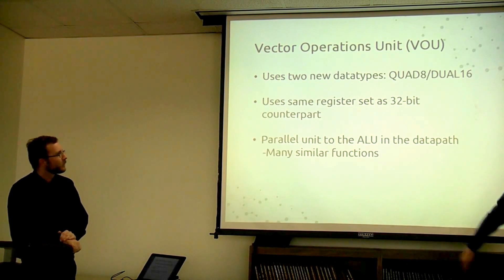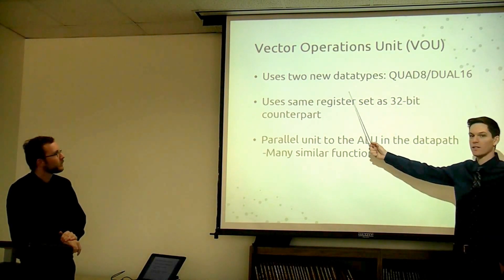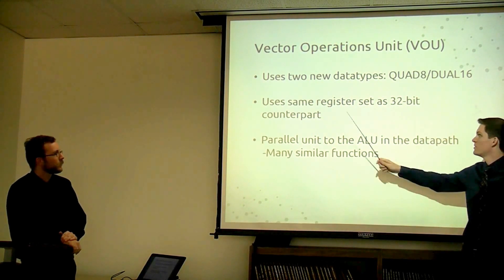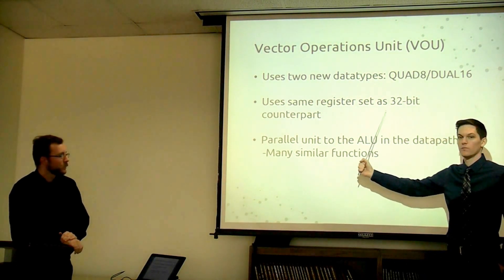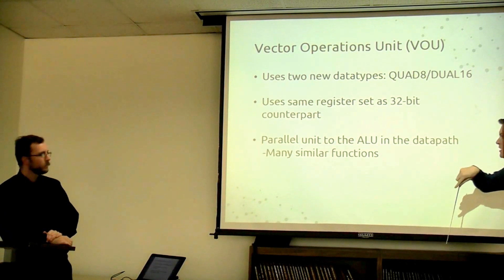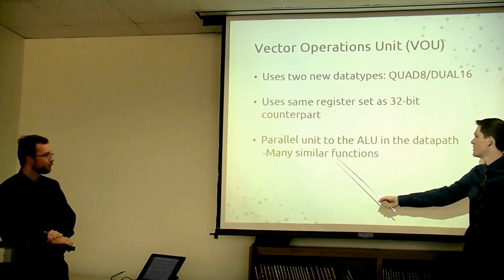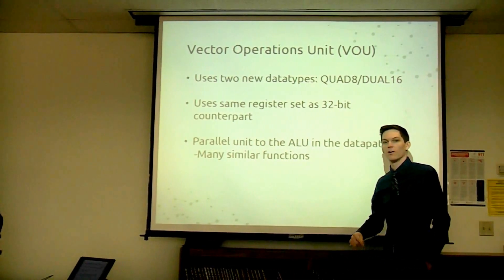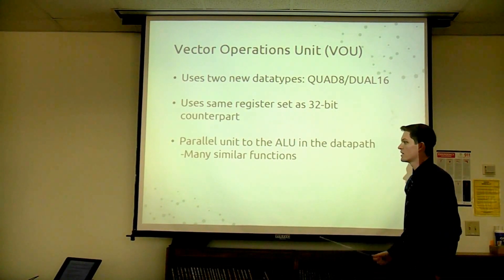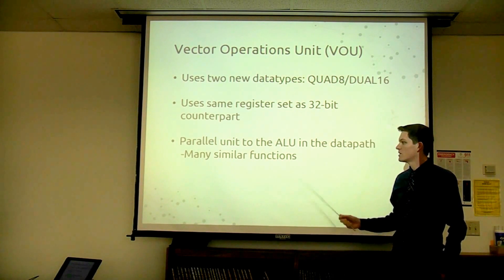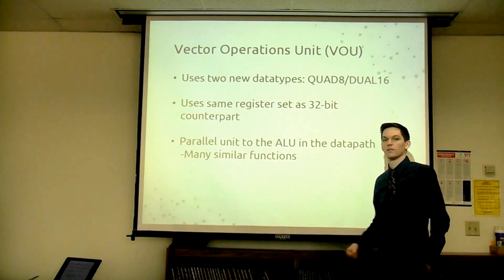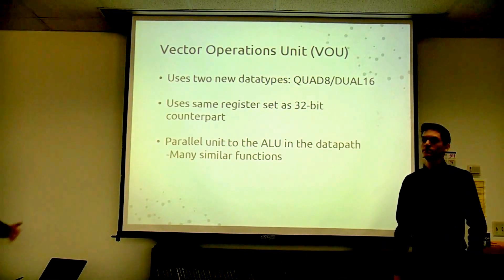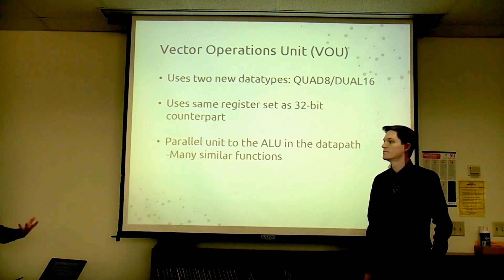We also have the vector operations unit, which uses the two new data types — Quad 8 or Dual 16. As of right now it uses the same register set as our 32-bit MIPS counterpart. It's a parallel unit. The ALU in the data path has a lot of similar functions to our regular ALU — we wanted to take the SIMD approach using those types of instructions while keeping it simple, following the same conventions as the regular data path.